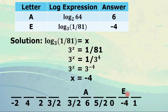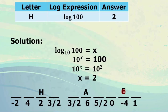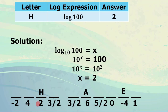For letter H, log of 100 — understood to be base 10 — equals x. Converting to exponential form: 10 raised to x equals 100, which is 10 squared. So x equals 2. We look for 2 in the answer bank and write letter H.